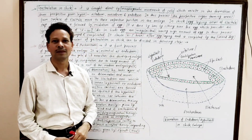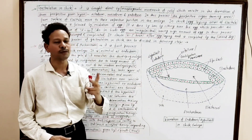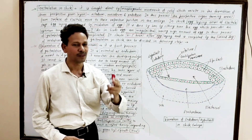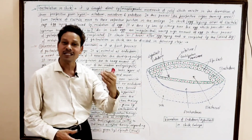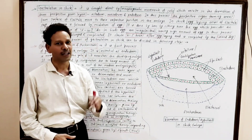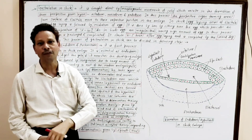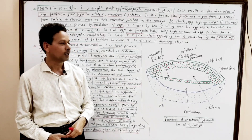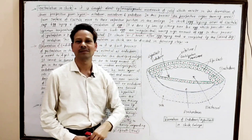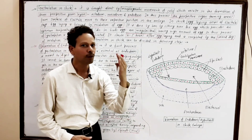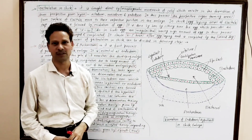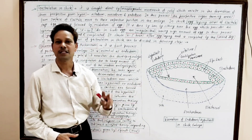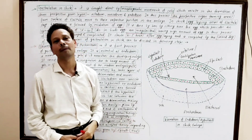The first step in the formation of gastrula is the formation of endoderm, because it is essential. The formation of endoderm provides nourishment to the developing embryo, because this endoderm — the hypoblast — is involved in the digestion of yolk. Due to digestion of yolk, food and nourishment are provided to the developing embryo.